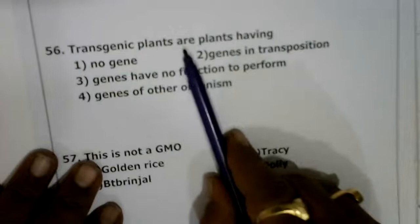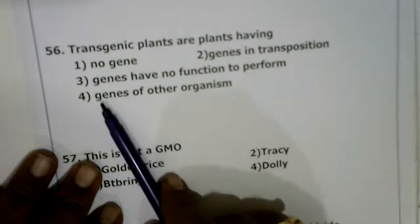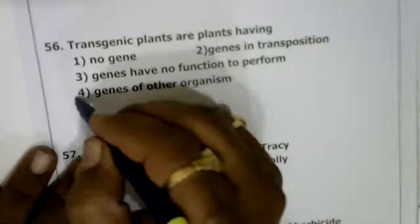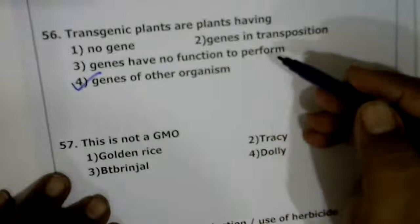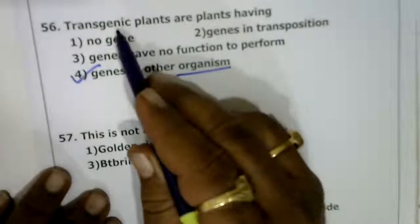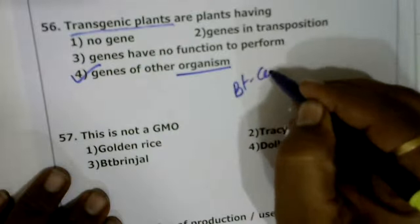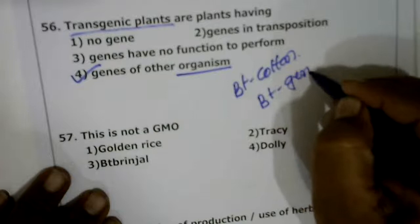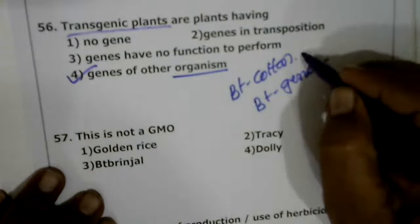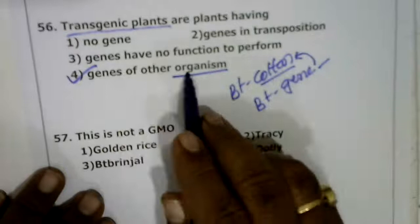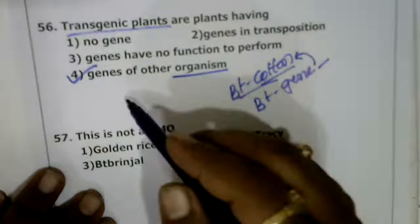Next: transgenic plants are plants having genes of other organisms. An isolated or desired gene from another organism is inserted into the plant, making it transgenic. For example, in Bt cotton, the Bt gene is taken from Bacillus thuringiensis and inserted into the cotton plant, giving it genes of another organism.